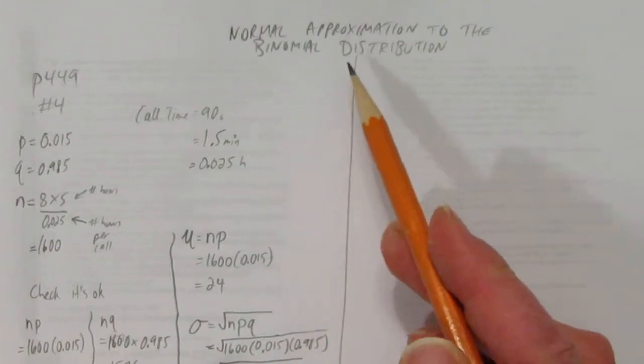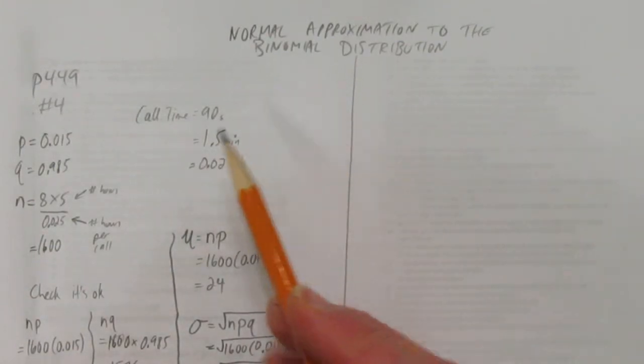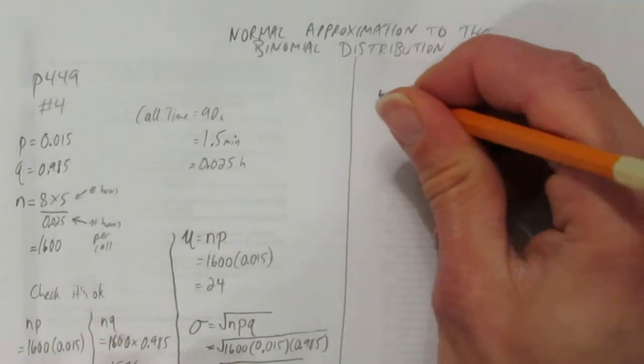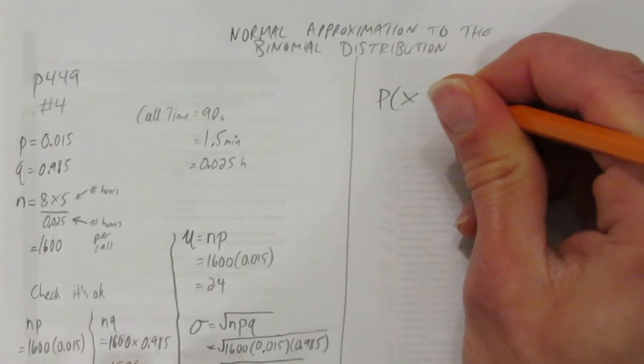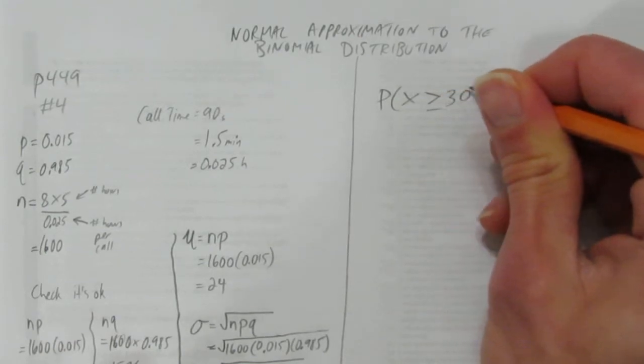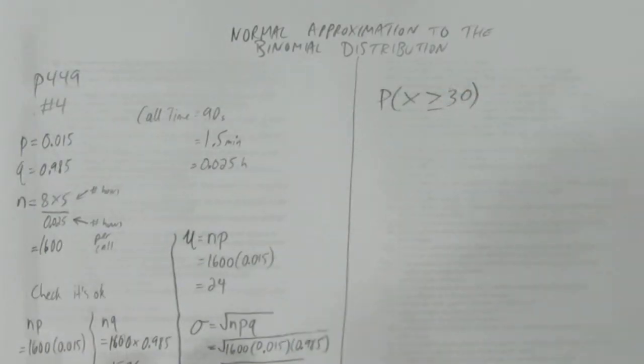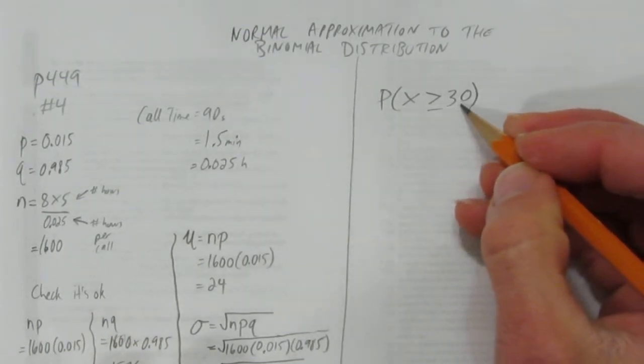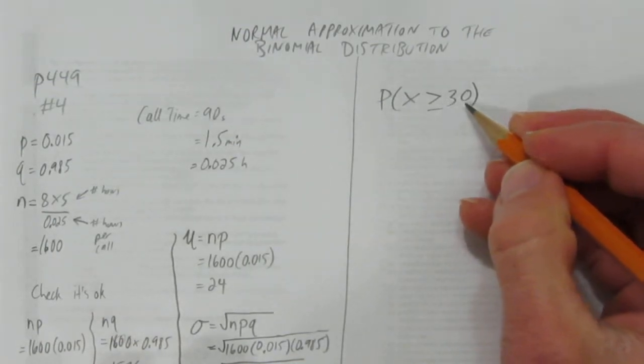And we have everything we need now to do the normal approximation. Let's go back to the question. What is the probability that Tony gets at least 30 new customers for the week? We're looking for the probability he gets greater than or equal to 30 customers. So I had to think there for a second because it's at least 30. So we can get exactly 30 or bigger.